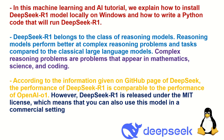According to the information given on the GitHub page of DeepSeek, the performance of DeepSeek R1 is comparable to the performance of OpenAI-O1, and this is really important. On the other hand, DeepSeek R1 is released under the MIT license, which means that you can also use this model in a commercial setting.